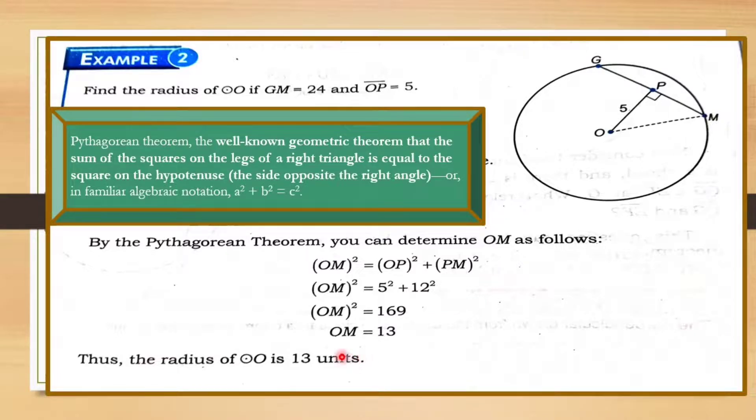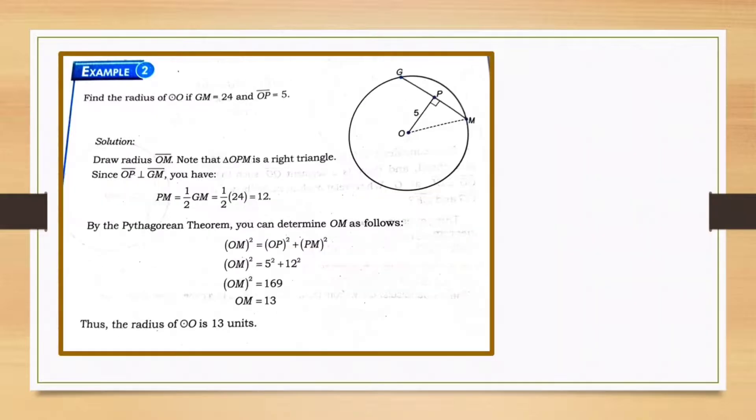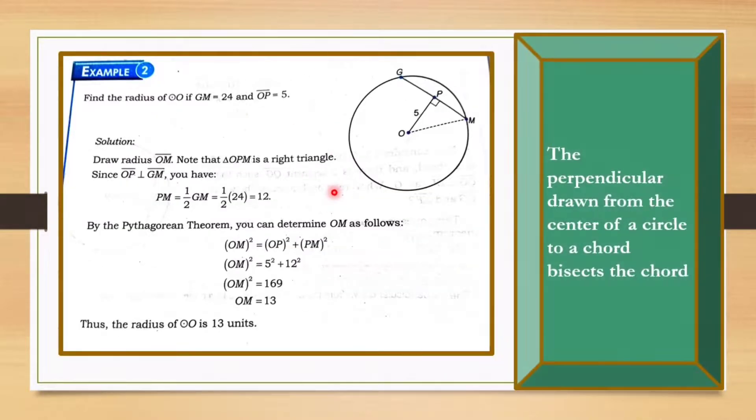From this previous example, our key concept is the perpendicular drawn from the center of a circle to a chord bisects the chord.